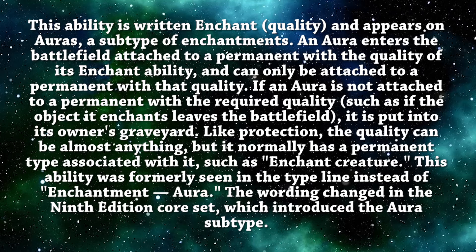So now back onto the class itself — how is this a keyword and what does it mean? The definition is: this ability is written 'enchant [quality]' and appears on auras, a subtype of enchantments. An aura entering the battlefield attaches to a permanent with the quality of that enchant ability and can only remain attached to a permanent with that quality. If an aura is not attached to a permanent with the required quality — such as if the enchanted object leaves the battlefield — it is put into its owner's graveyard. Like protection, the quality can be almost anything, but it normally has a permanent type, such as 'enchant creature.' This ability was formerly seen on the type line as 'enchantment/aura,' and the wording changed in the 9th Edition core set, which introduced the aura subtype.